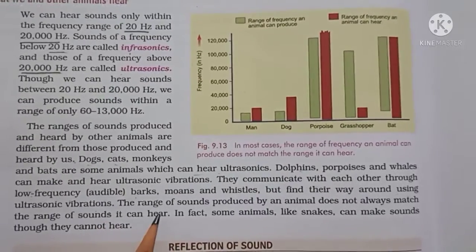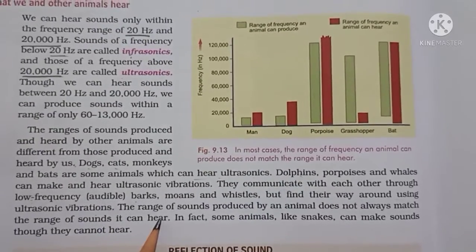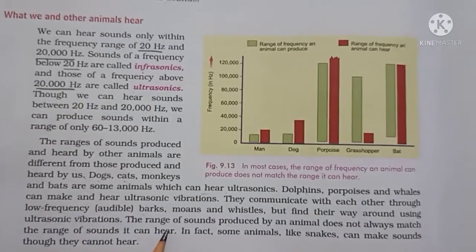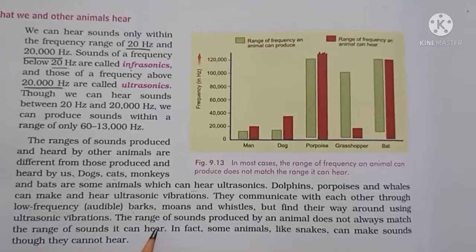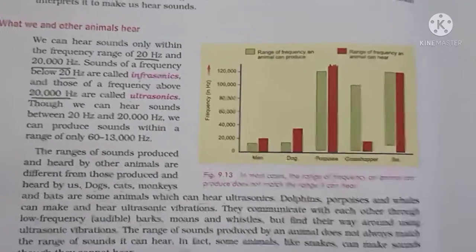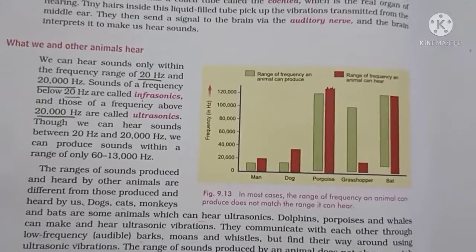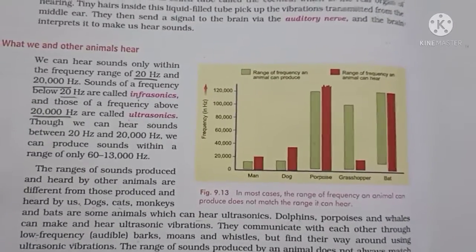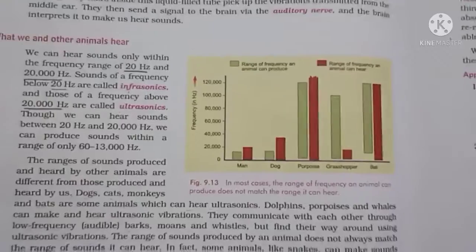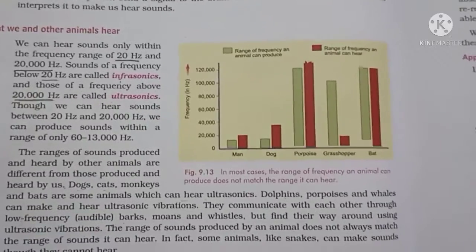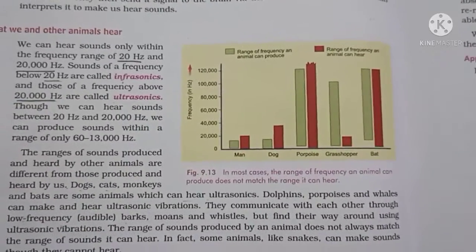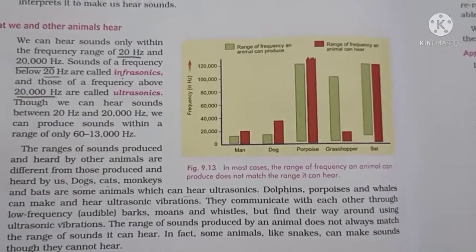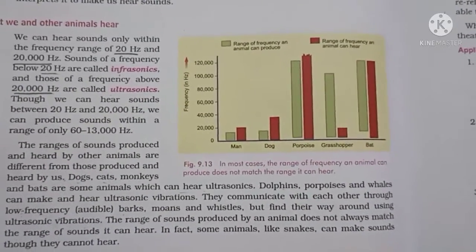Dogs can hear vibrations up to 40,000 Hz. Monkeys, deer, cats, porpoises, and leopards can hear ultrasonic sounds up to 50,000 Hz. But we human beings can hear only up to 20,000 Hz.